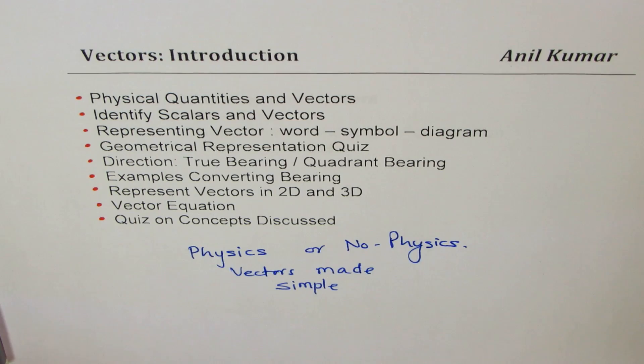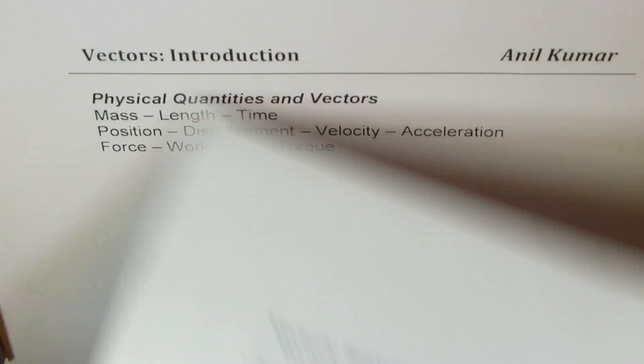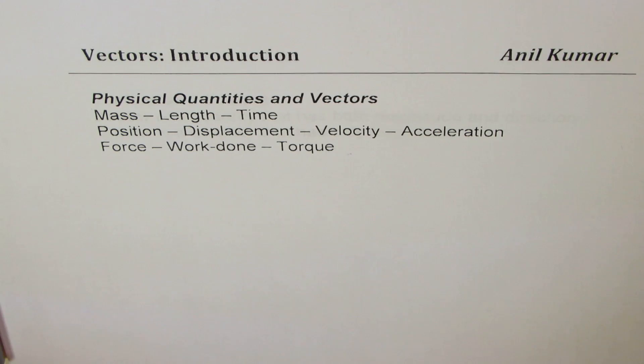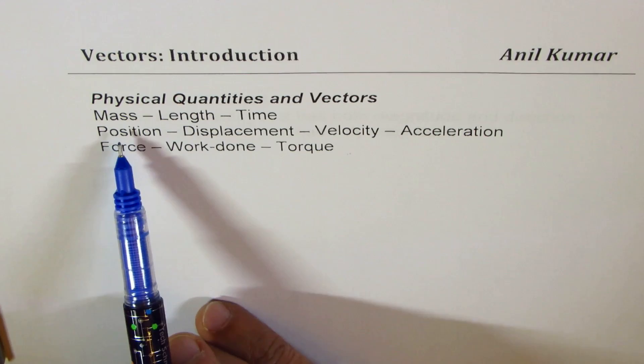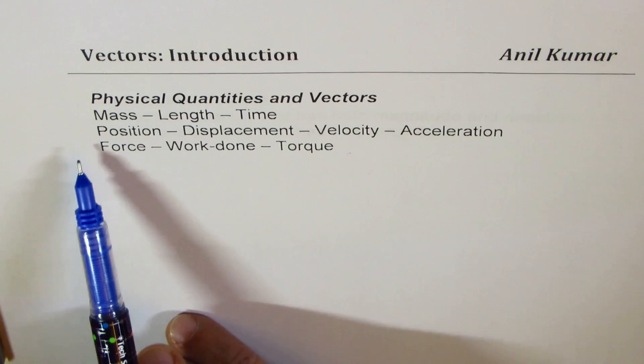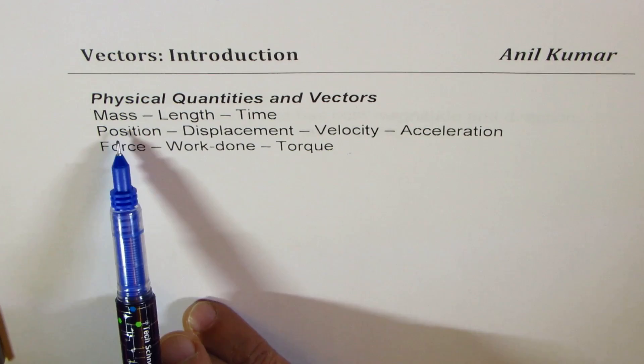Let's begin by understanding the basic physical quantities. You will realize that vectors make you understand all physical quantities better. There are a few terms which are going to come again and again, common for students of physics. These are mass, length, and time. Most of the units are related with MLT — mass, length, and time.